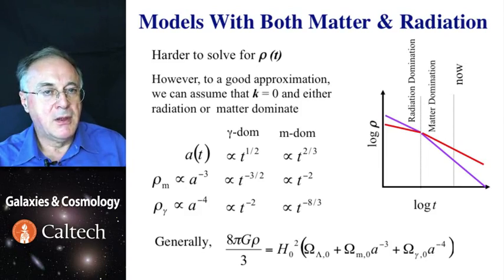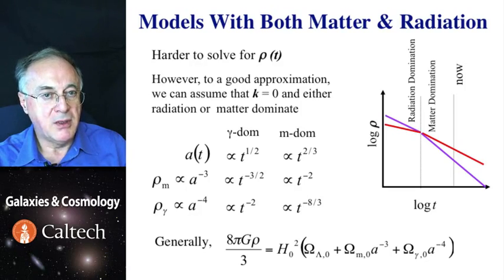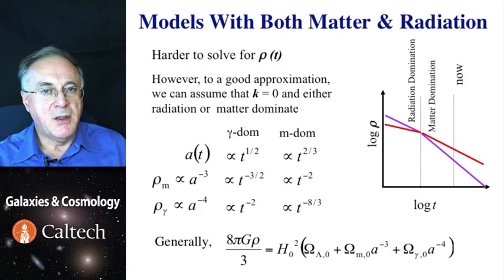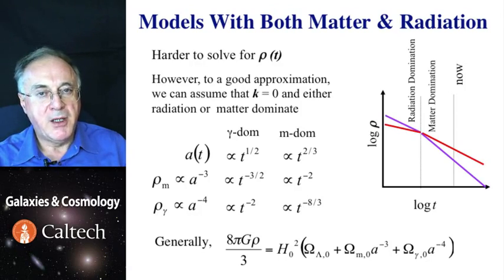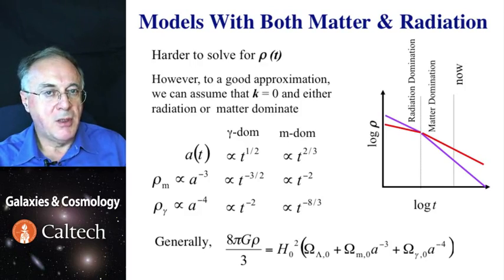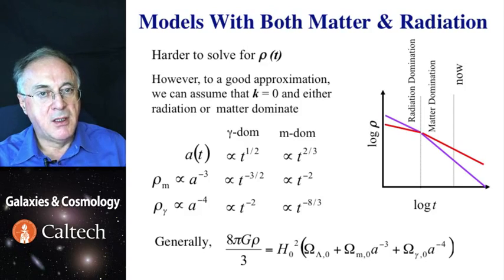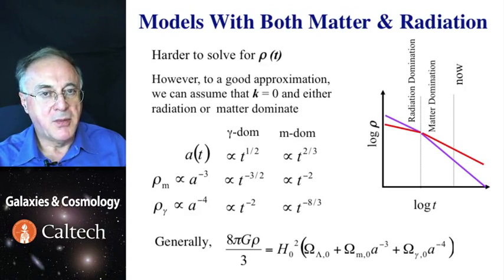In either case, early on, the model is very close to flat, and so we can assume curvature of zero to begin with. Since the density of the radiation always decreases faster than that one of matter, sooner or later those two curves have to cross. And so, at earlier times, radiation dominates, and at later times, matter dominates. And then each one drives the expansion according to the different power of time.